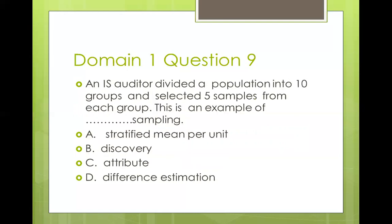Question nine: an audit report divided the population into ten groups and selected five samples from each group. This is an example of stratified mean per unit sampling. Discovery sampling is a type of attribute sampling used for substantive tests, so that is out. Difference estimation is a variable sampling method that compares estimated value with actual data value. Dividing a population into classes and picking a sample from each class is stratified mean per unit.